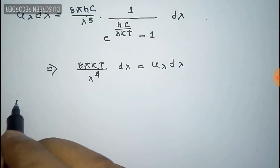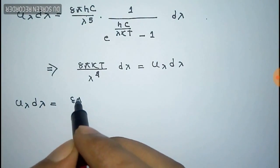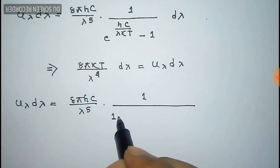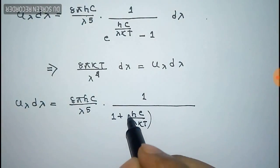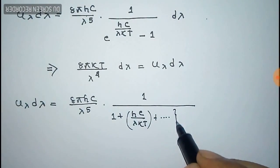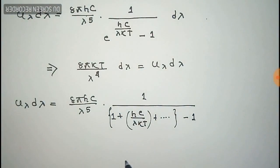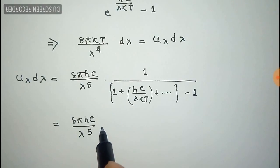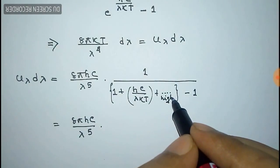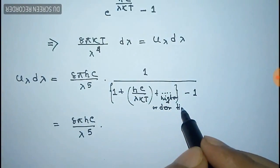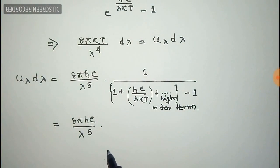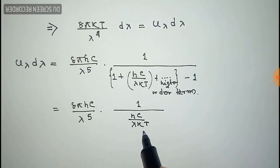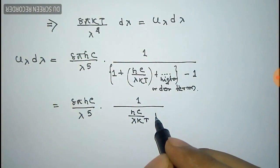After expanding the exponential part, e^(hc/λkT) becomes: 1 + (hc/λkT) + higher order terms. The bracket close minus 1 means the +1 and −1 cancel each other, and what remains is (hc/λkT) plus the higher order terms in the denominator.